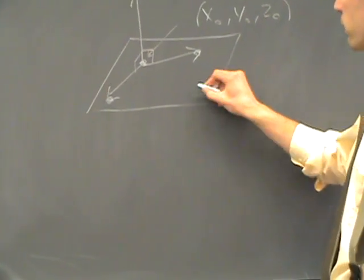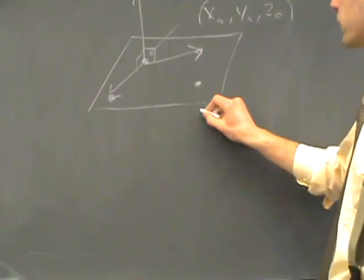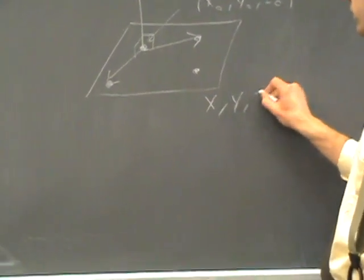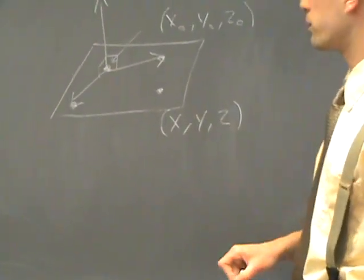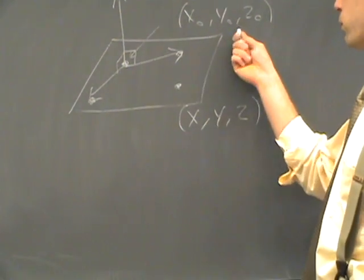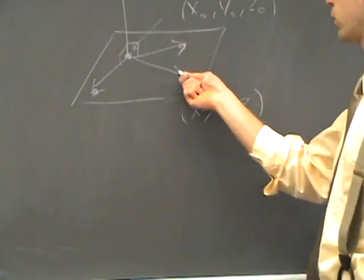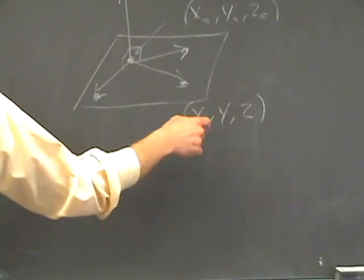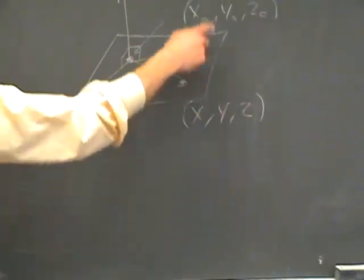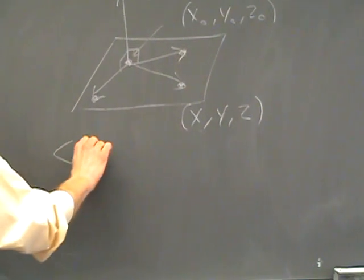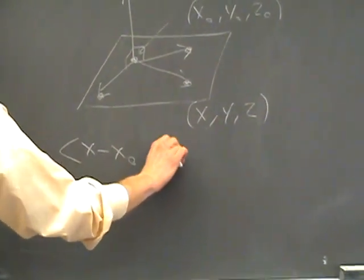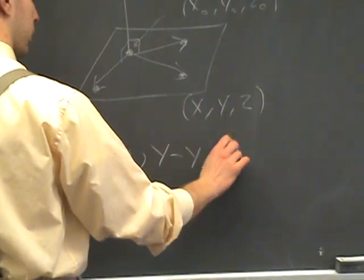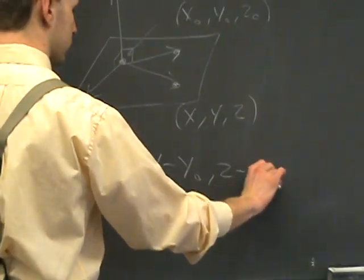What describes that set? Well, let's pick an arbitrary point X, Y, Z that's in the plane. If we make a vector from the given point to this point, what will the components of that vector be? It will be the final point minus the initial point. So you'll have X minus X0, Y minus Y0, Z minus Z0.